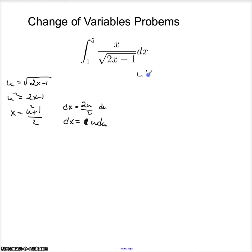Now, my lower limit when x is 1, u is the square root of 2 times 1 minus 1, which is 2 minus 1 is 1. So this is the square root of 1 or just 1. My upper limit when x is 5, u is the square root of 2 times 5 minus 1. So this is the square root of 10 minus 1 or 9 or 3.